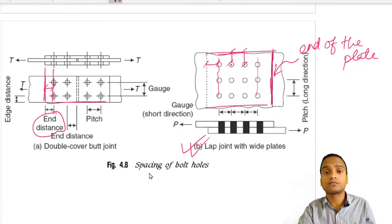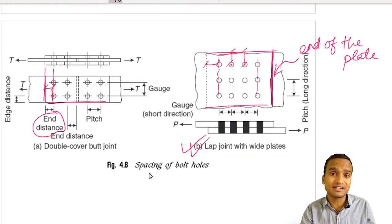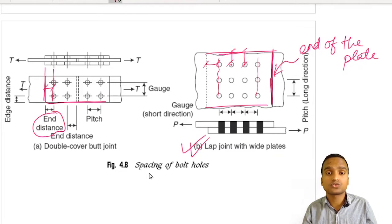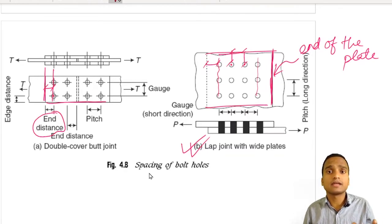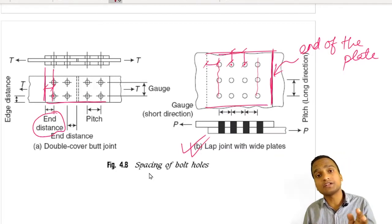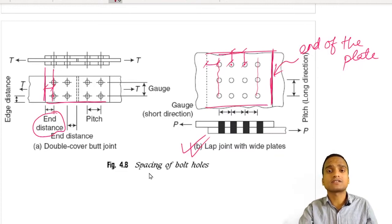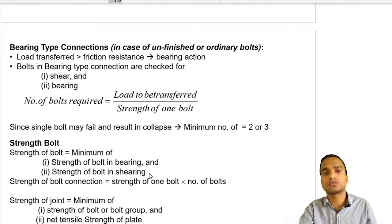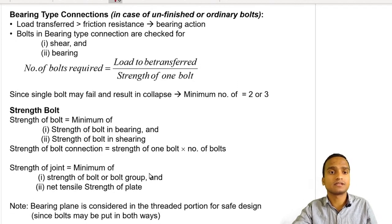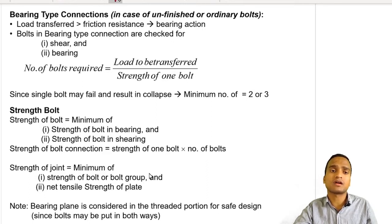You have to understand which type of force transfer is occurring in the joint, which type of bolt has been used, whether it is a welded or bolted connection, whether the bolted connection is a butt joint or lap joint, how many shear planes exist, which formula to apply, and whether the joint uses HSFG (high strength friction grip) bolts — because different formulas apply. In bearing type connections, load transfer is by friction resistance and bearing action.